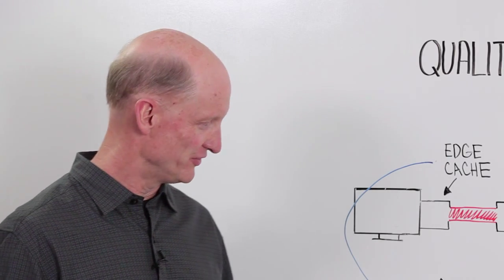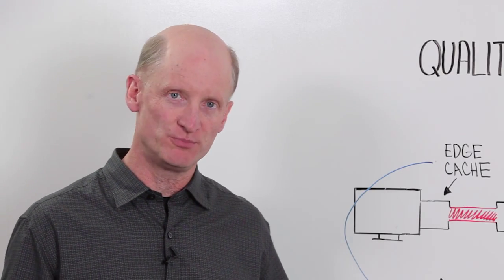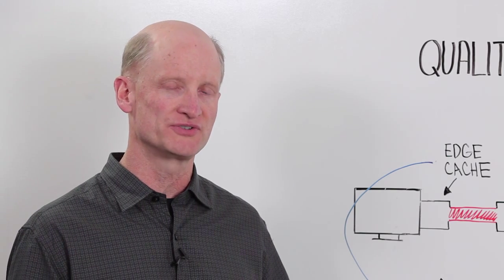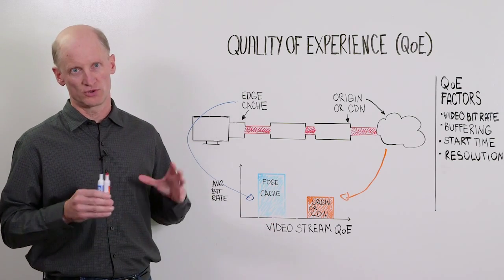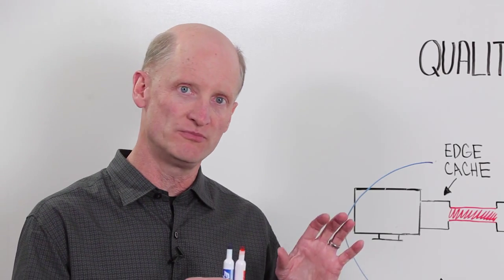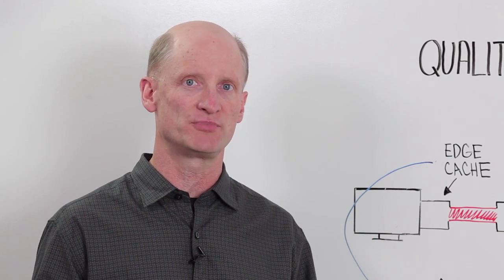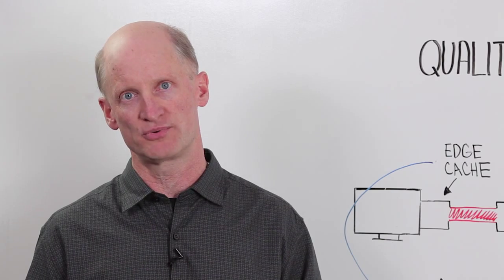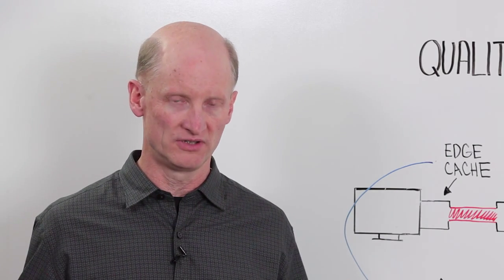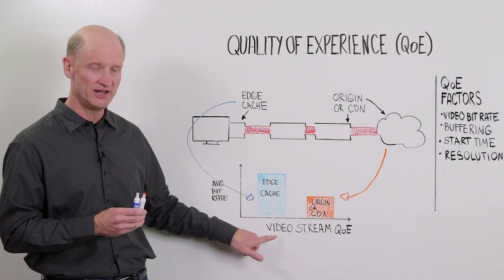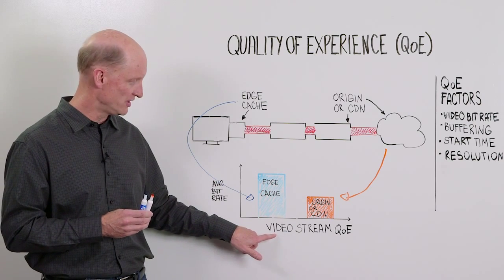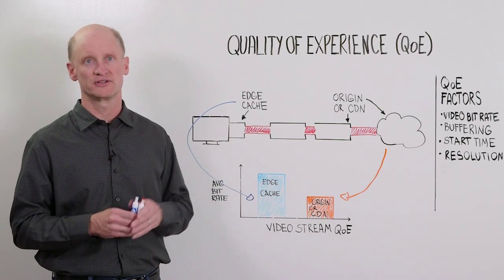It's also important to note that Quilt's measurement is at peak time, when capacity is most scarce in the network. We have based our measurements on worldwide deployments. We also make measurements on specific content providers and specific network operators. Based on all of these measurements, we've found in many cases, QoE achieved by edge caching is more than a hundred percent better than traditional delivery methods.